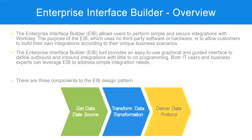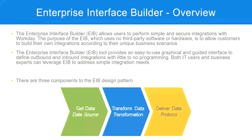These are the three components in an EIB design pattern. We are going to configure these three steps: get data — where are we going to get the data from; transform — do we need transformation? If yes, configure that; if no, leave it blank. Then deliver the data — how are we going to send the data to an external system? Once we configure these three steps, our EIB is ready, and we can start exchanging information from Workday with an external system.